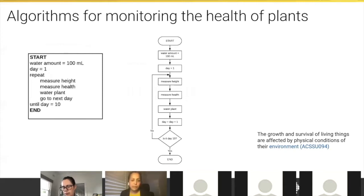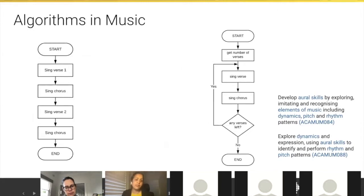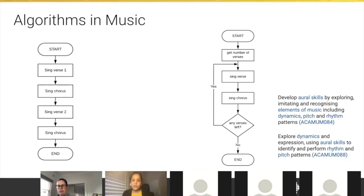In science, you can represent an experiment as a really simple algorithm — for example, measuring the health and height of a plant when you water it for 10 days. Changing it to 20 days is just a modification of the algorithm. In music, you might start with verse one, chorus, verse two, chorus — and then extend it to add a loop at year 5-6, recognizing the pattern. Whether it's 2 verses or 99 verses of '99 bottles of whatever on the wall', you can scale up your algorithms to reflect what students are learning in music.